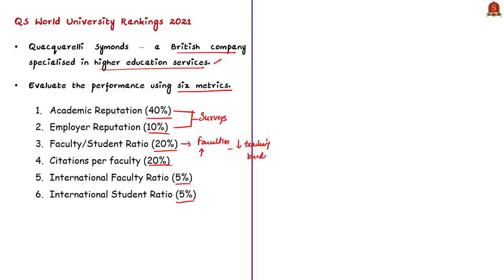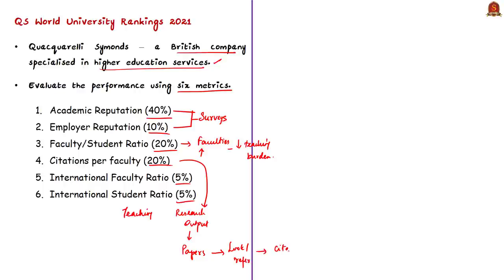Citations per faculty is related to research output. Researchers publish papers which others reference in their own research — this is what is meant by citation. QS calculates the number of citations received by all papers produced by an institution over a certain time period, divided by the number of faculty members — this is citations per faculty. The next two parameters, international faculty ratio and international student ratio, measure the number of international faculty and students present in a university at the time of ranking assessment. These are the six metrics.